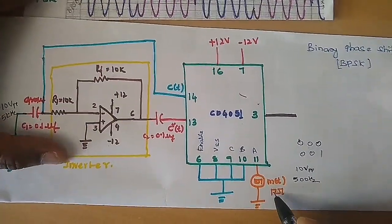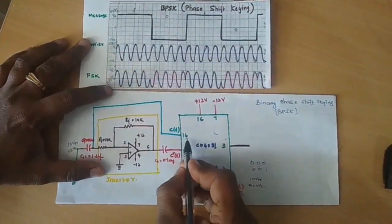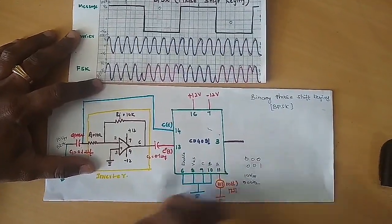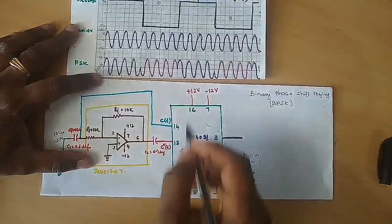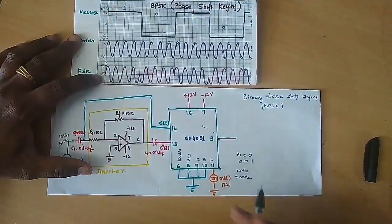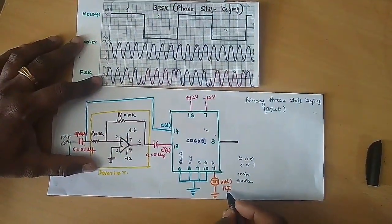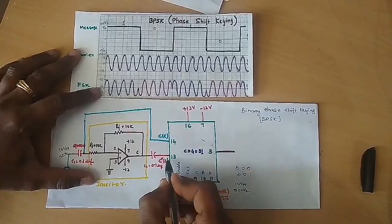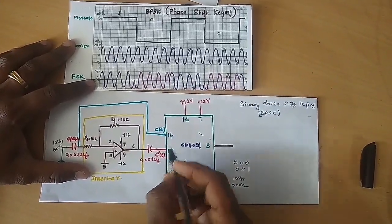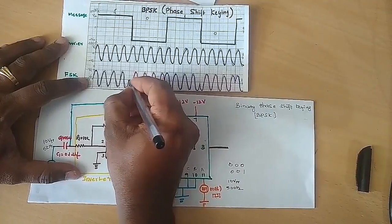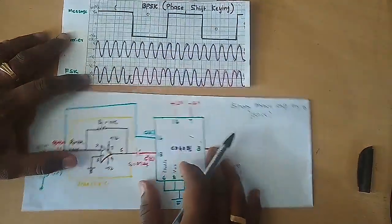Whenever the message signal is 1, that is binary data 1, interpreted by the positive amplitude of the square wave, then pin number 14, that is input channel 1, will be selected as output across pin number 3. So we will obtain a fixed amplitude, fixed frequency carrier signal to represent binary data 1. And whenever the amplitude of the message signal is negative, to interpret binary data 0, pin number 13 will be selected as output. Pin number 13 consists of C*(t), the 180 degree phase shifted version of C(t), so we obtain the phase-shifted carrier to represent binary data 0, as observed in the waveform.